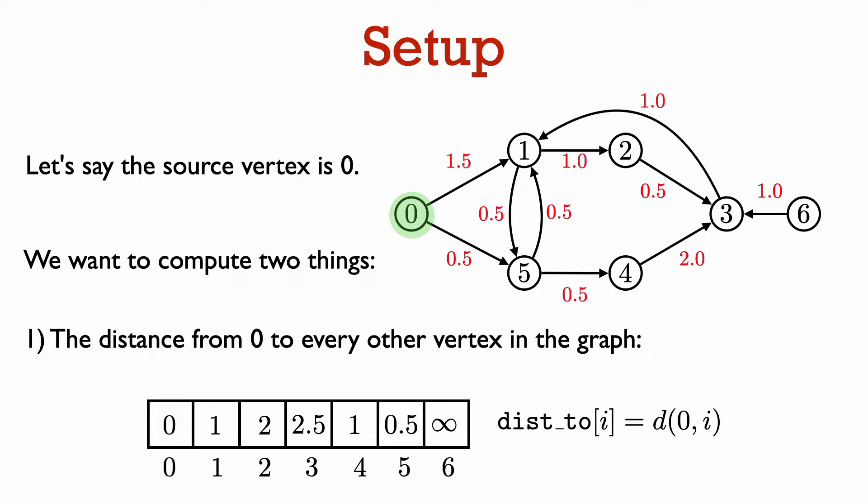Let's recall the setup. We want to solve the single source shortest path problem. Let's say our source is vertex zero. We want to compute two things. The first is the distance from vertex zero to every other vertex in the graph. Recall that we use D to denote the distance from vertex zero to vertex i — that is, the length of a shortest path from vertex zero to vertex i.